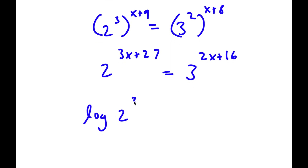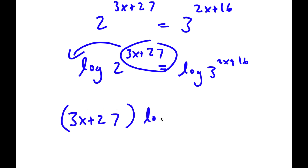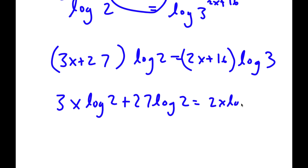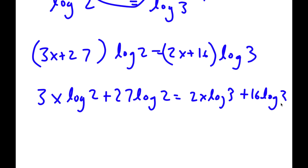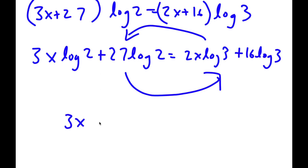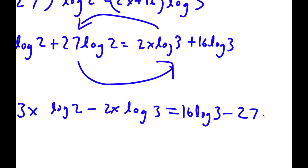Now if I take the log on both sides, I have log of 2 to the power of 3x plus 27, equal to log of 3 to the power of 2x plus 16. I can move the exponents to the front: 3x plus 27 times log 2 is equal to 2x plus 16 times log 3. Distributing gives me 3x times log 2 plus 27 log 2 equal to 2x times log 3 plus 16 log 3. Rearranging: 3x times log 2 minus 2x times log 3 is equal to 16 log 3 minus 27 log 2.